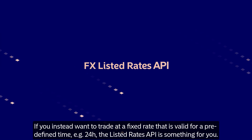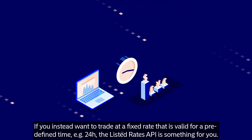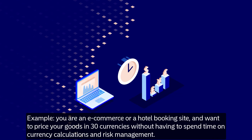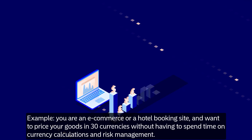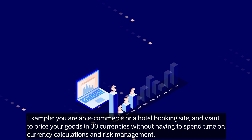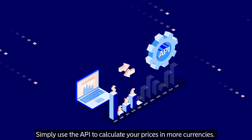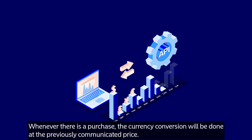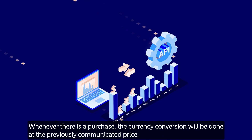If you instead want to trade at a fixed rate that is valid for a predefined time — for example, 24 hours — the Listed Rates API is something for you. For example, if you are an e-commerce or hotel booking site and want to price your goods in 30 currencies without spending time on currency calculations and risk management, simply use the API to calculate your prices in more currencies. Whenever there is a purchase, the currency conversion will be done at the previously communicated price.